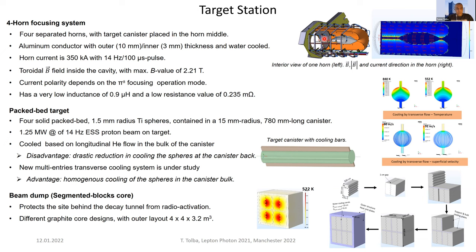As seen in this cross-sectional CAD model, the horn body will be built from aluminium conductor with outer conductor thickness of 10 mm and inner conductor thickness of 3 mm. It will be cooled by water at 350 kA current at 14 Hz, with a 100 microsecond pulse, producing a toroidal magnetic field of about 2.21 Tesla. The current polarity depends on the pi-plus or pi-minus focusing operation mode. The horn has low inductance and low resistance values.